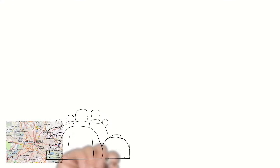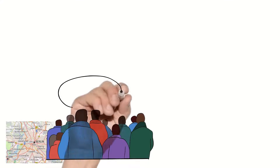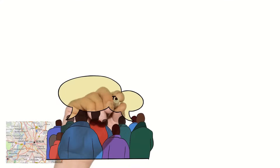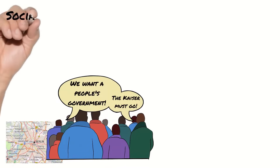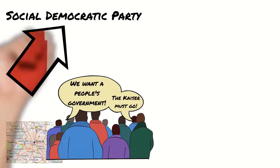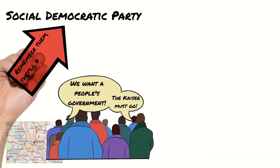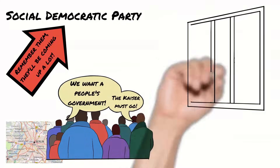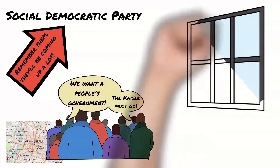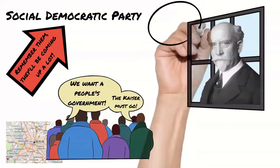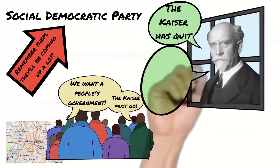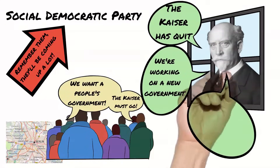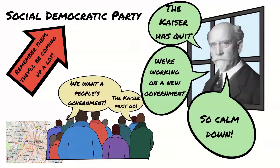Meanwhile on the streets of Berlin people were calling for the abdication of the Kaiser and the establishment of a communist government in his place. Alarmed by this, one of the leading members of the Social Democratic Party, the SDP, Philip Scheidemann, gave a hurried speech to the gathered crowd to announce the abdication of the Kaiser and told them a republic would be set up in his place. He asked for calm while this was established.